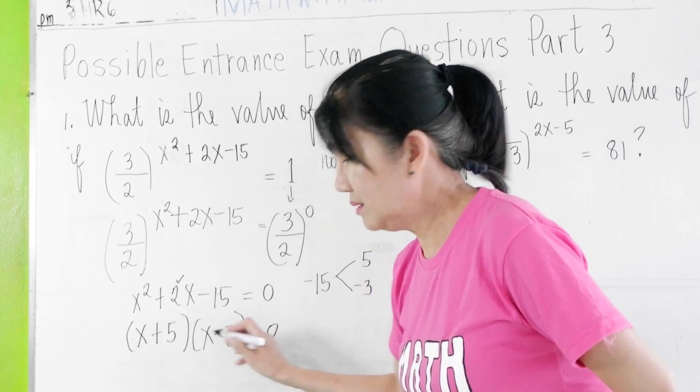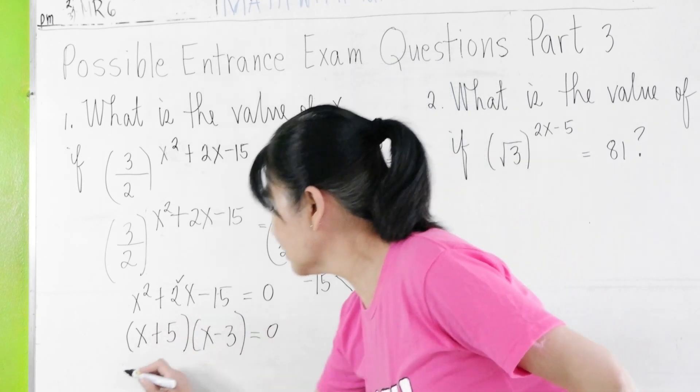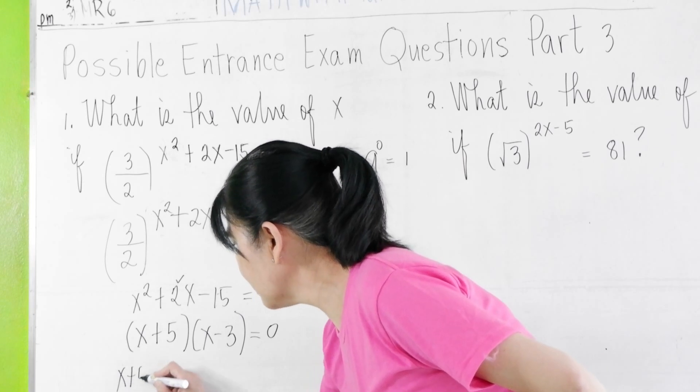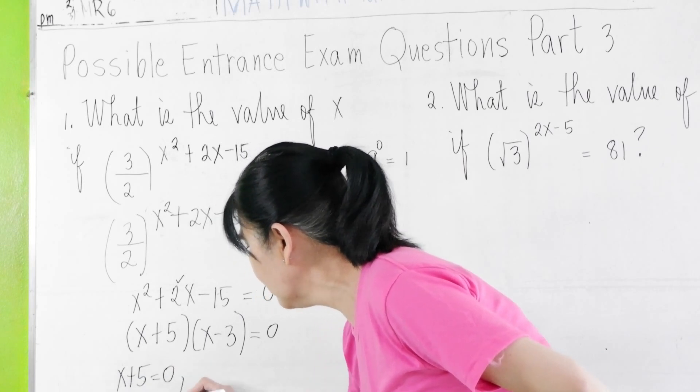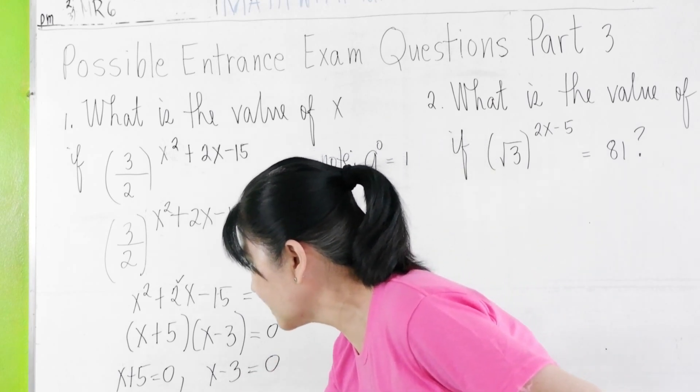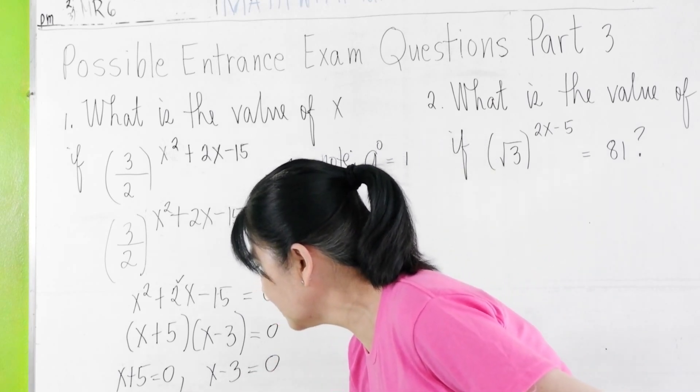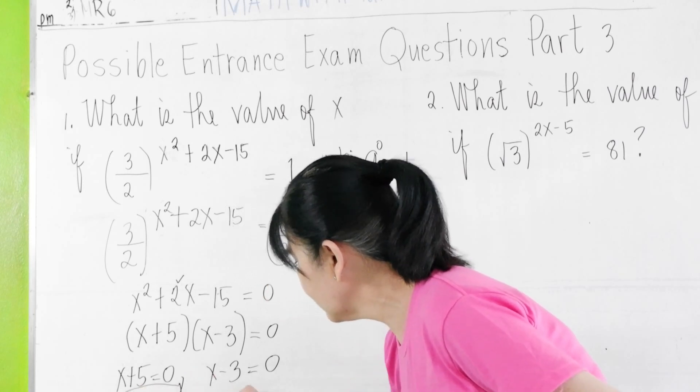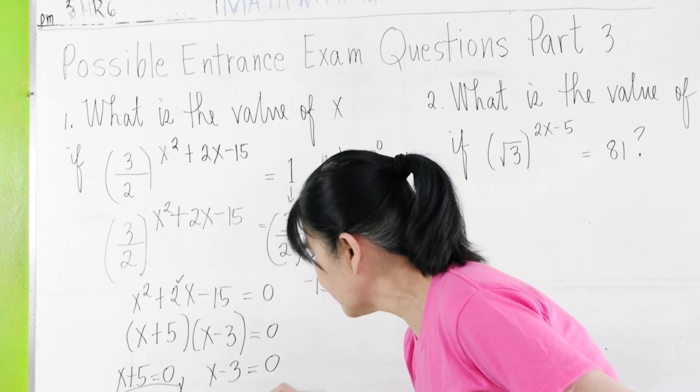Since both factors are equal to 0, then x + 5 = 0 or x - 3 = 0. We solve for x here. x = -5 and x = 3.